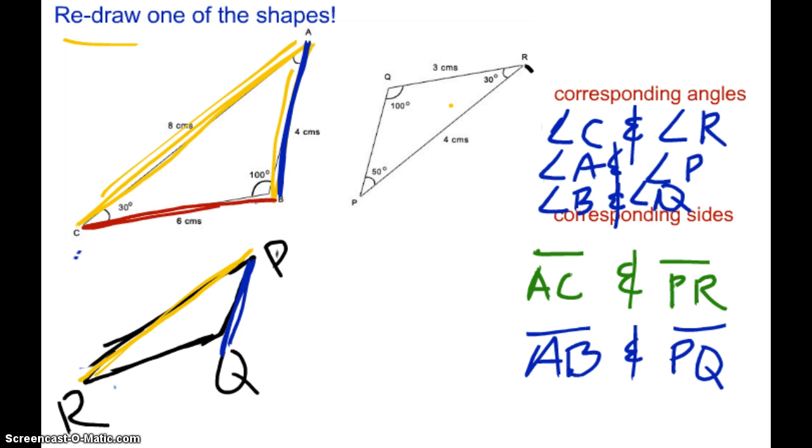And then, what is our last one? We have BC, and that corresponds to QR. So segment BC, and segment QR. And that's it.